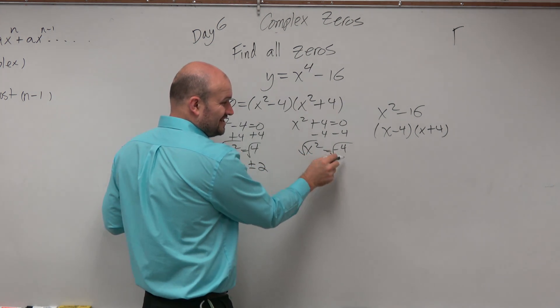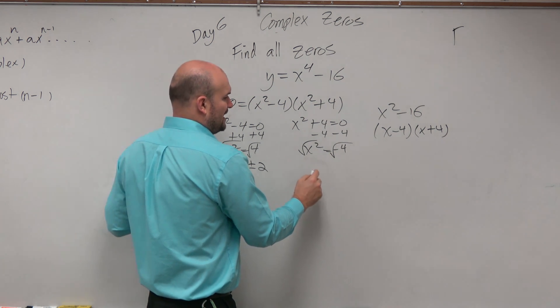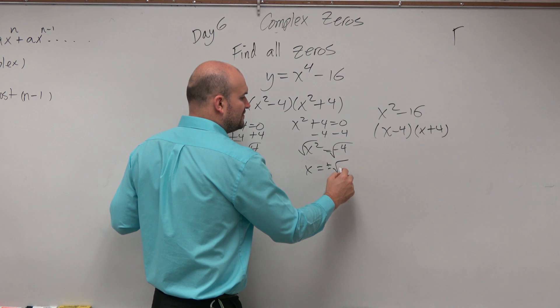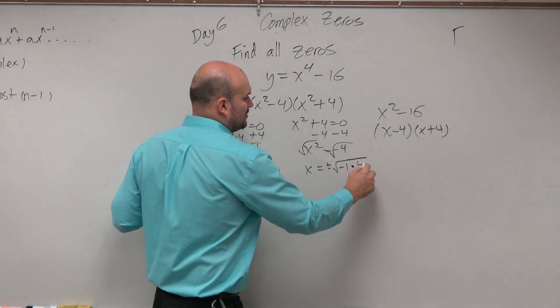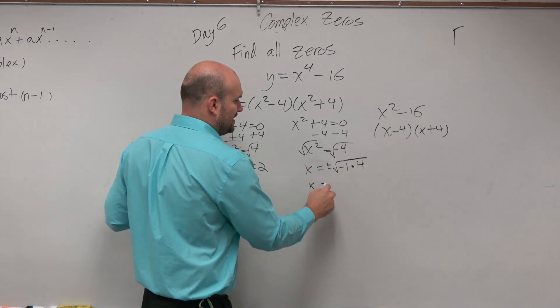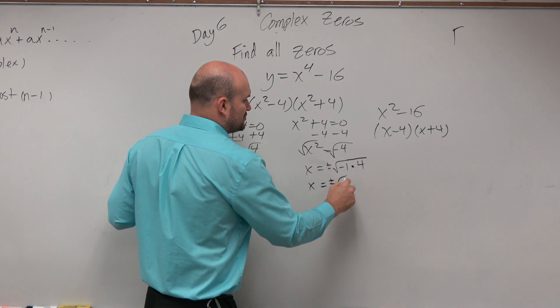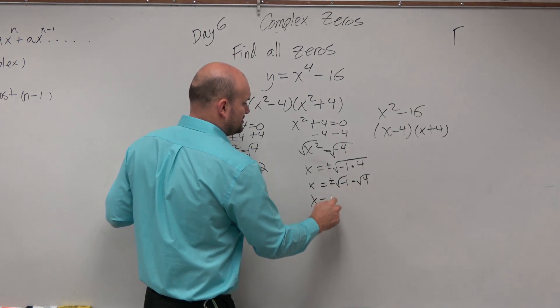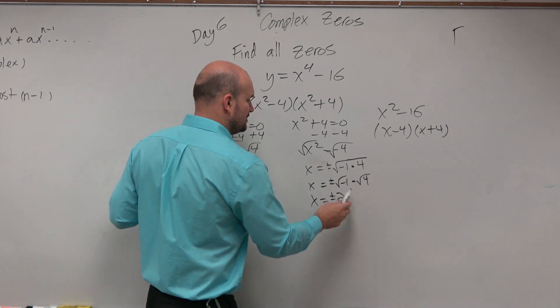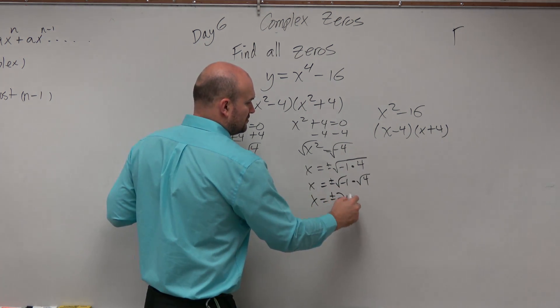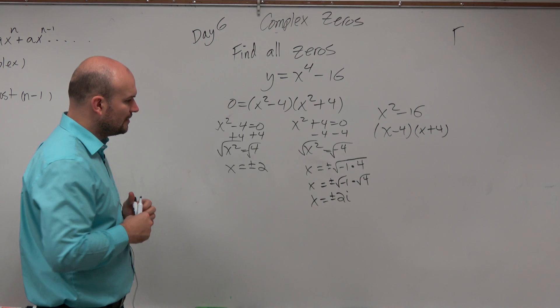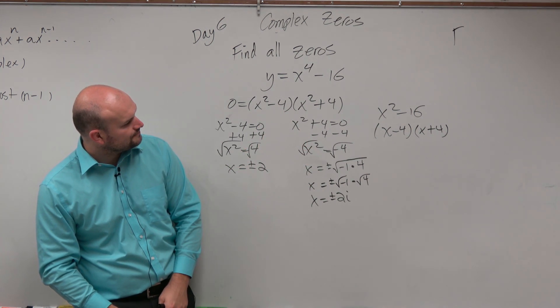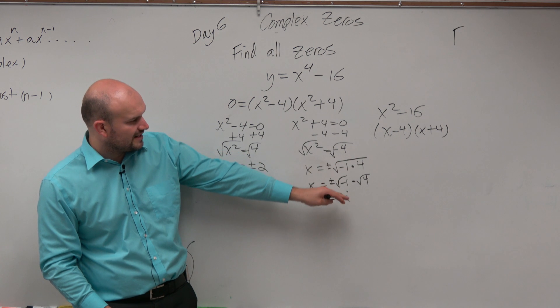In this case, you can think of the negative 4 as x equals plus or minus the square root of negative 1 times 4. So therefore, that could be x equals plus or minus square root of negative 1 times the square root of 4, which is plus or minus 2, square root of 4 is 2, i. And that goes through simplifying the radicals.